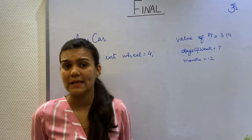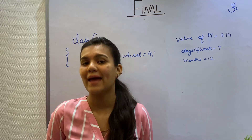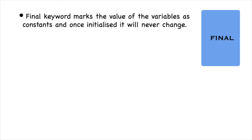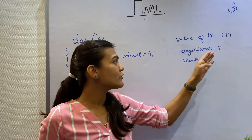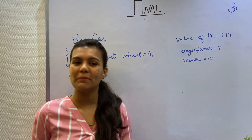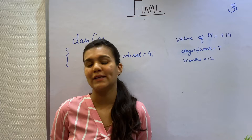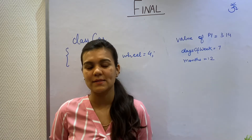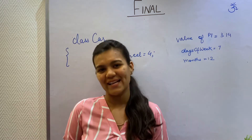The second keyword that I'll be discussing is the final keyword. As the name suggests, the final keyword marks the value of the variable as constant, and once initialized, it can never change. Some examples of the final keyword are the value of PI, the days of the week, and the months — all of these values remain constant. The value of a final keyword variable can be assigned either at the time of declaration or in a constructor. If you do not assign a value at both of these places, the compiler will give an error.